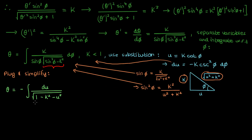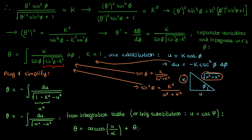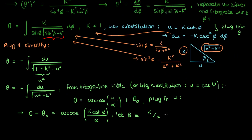Here comes the punch line. Because k is less than 1 as we said earlier, 1 minus k squared will be a positive number, and we can write it as another positive number alpha squared. So we'll be integrating the negative of 1 over the square root of alpha squared minus u squared with respect to u. You can find the result of this integral from an integration table, or you can do another trig substitution letting u equal cosine of some dummy variable psi. In either case, you'll find that theta equals the arc cosine of u over alpha plus some integration constant theta naught. We then put everything back in terms of phi, and since u was k times the cotangent of phi, we can finally write the equation of the geodesic on the sphere as theta minus theta naught equals arc cosine of beta times cotangent of phi. Beta and theta naught are integration constants solved for using the boundary conditions from points A and B.